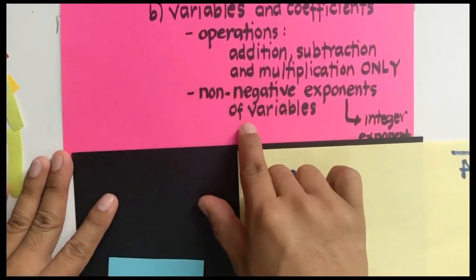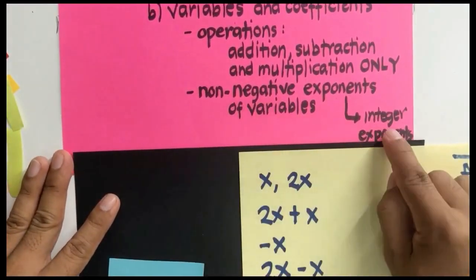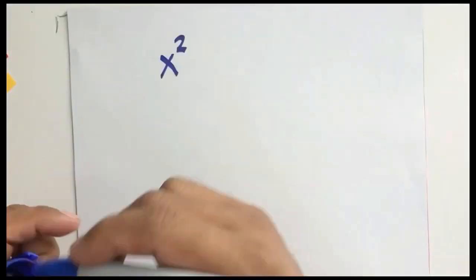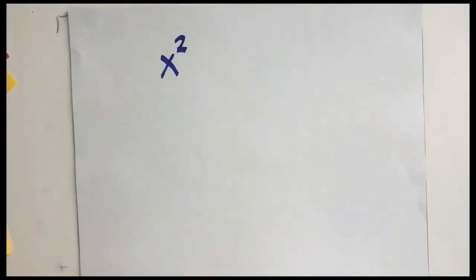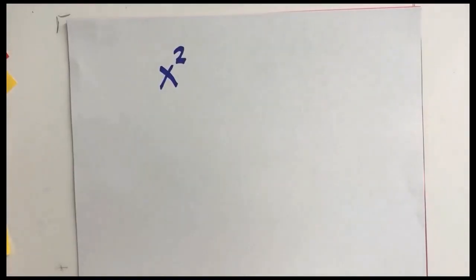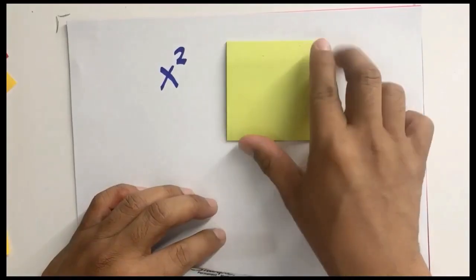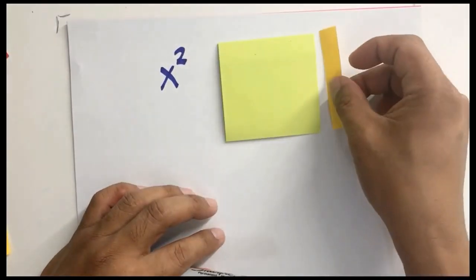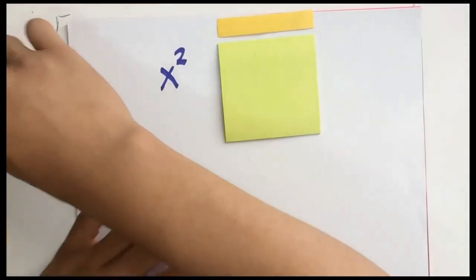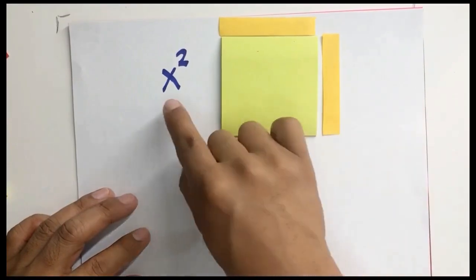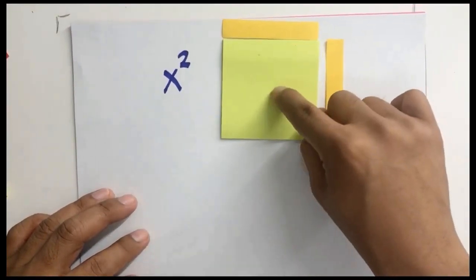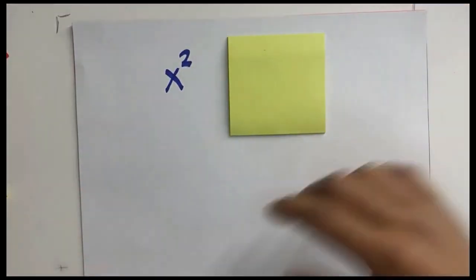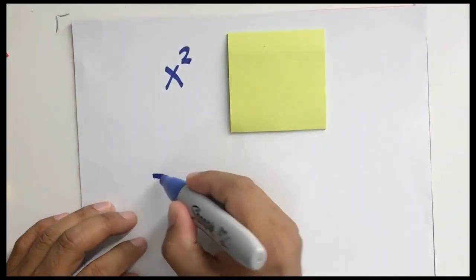What does non-negative integer exponent mean? If we have x squared, it is considered a polynomial. We can represent x squared as a square whose side length is x — so x by x units. The area of this is x squared. You can also have negative x squared as a polynomial.